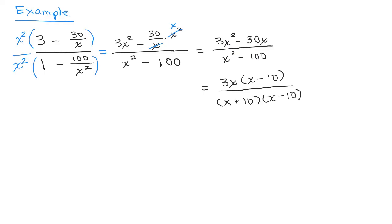And note, X minus 10 cancels. So we end up with 3X over X plus 10. By the way, you can always keep a parentheses around the binomials like X plus 10, but it's not necessary.